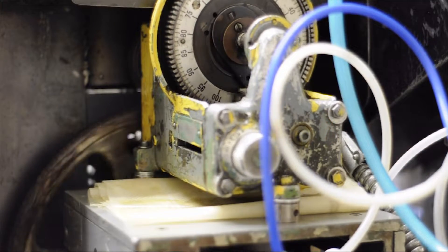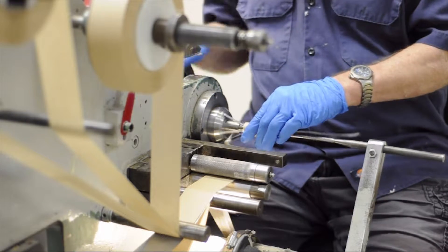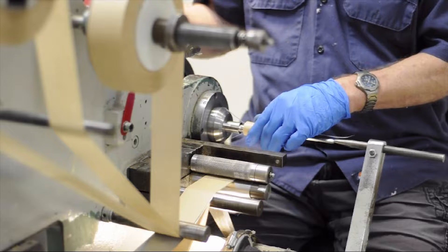In part one we showed the anode and cathode stamping process and the capacitor winding. Be sure to watch that first if you haven't seen it yet. There's a link to part one in the description below.